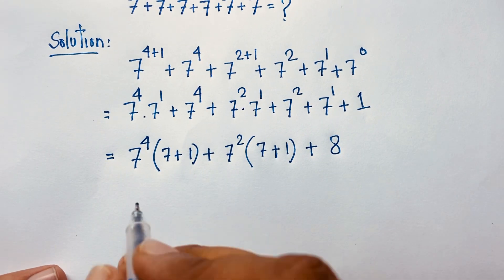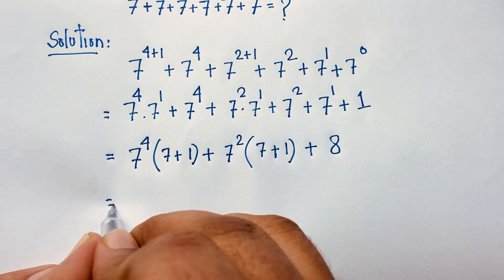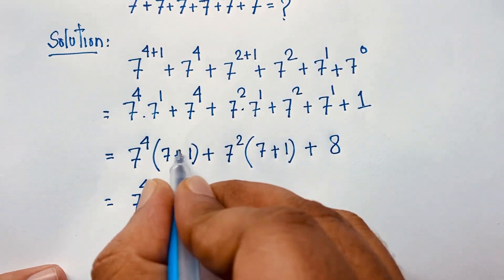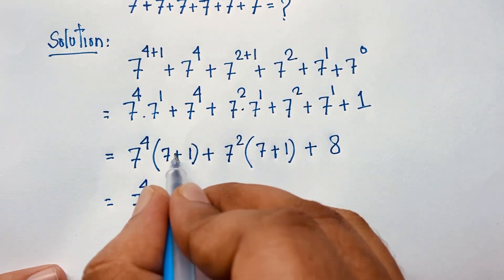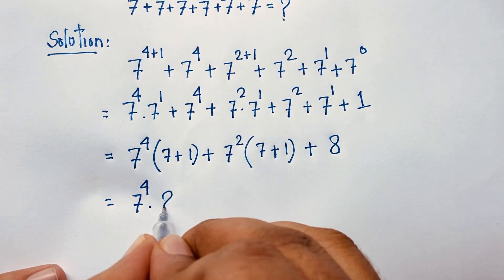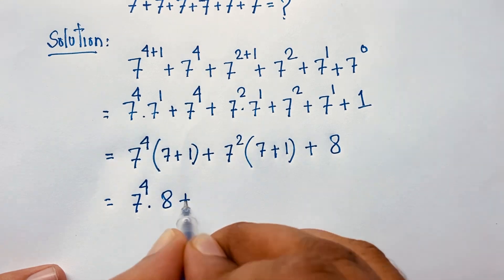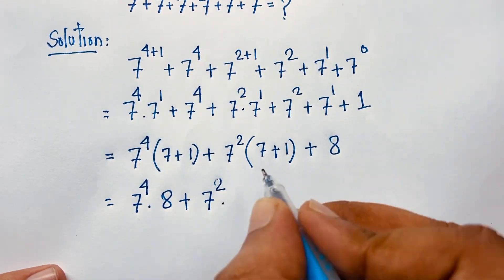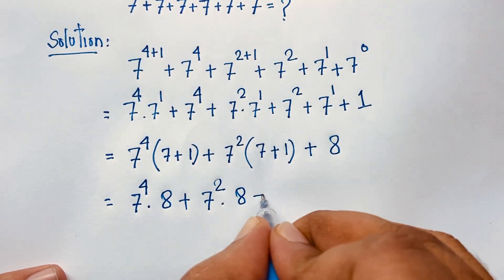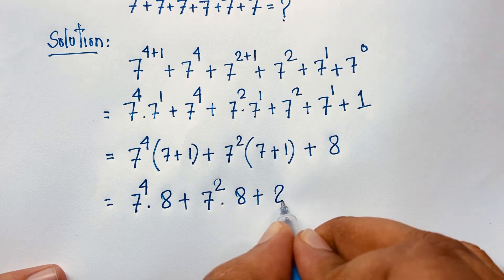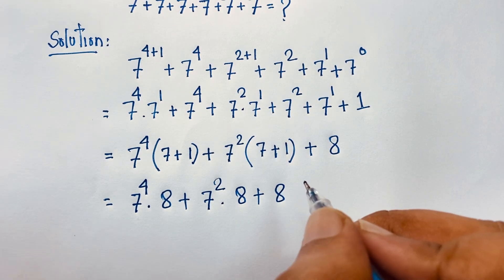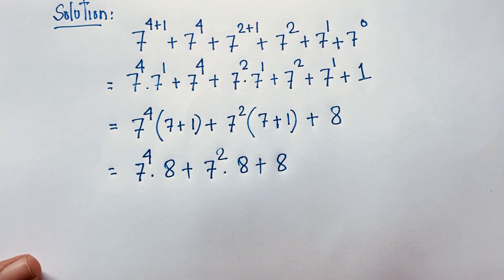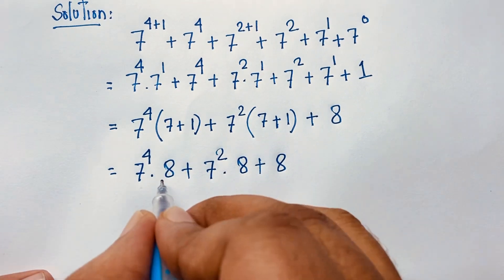At this moment I can see: 7 to the power 4 times 8, plus — and similarly, (1 plus 7) gives 8, so we get 7 to the power 2 times 8, plus — and again (1 plus 7) equals 8, giving another 8. So the expression becomes 7 to the power 4 times 8, plus 7 to the power 2 times 8, plus 8.